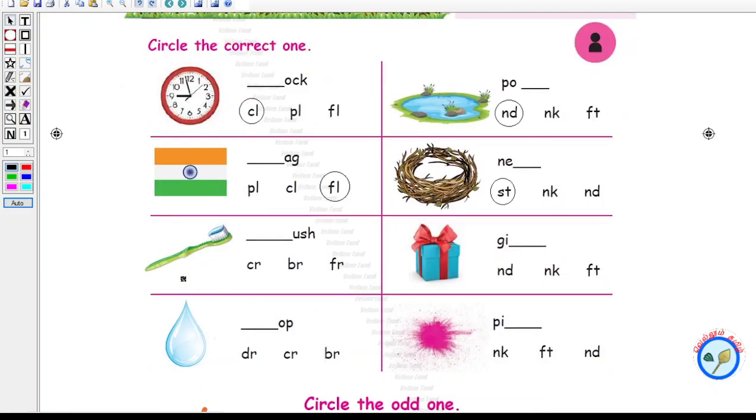What is this? This is a toothbrush. So what is the spelling for brush? B-R-U-S-H. So here let me circle B-R.